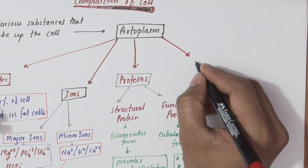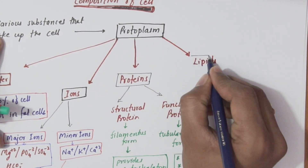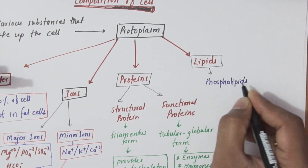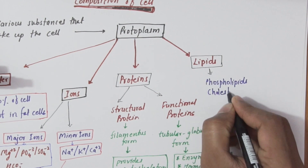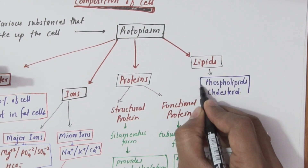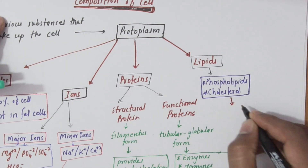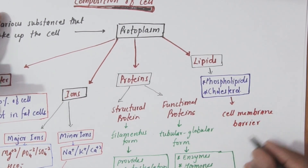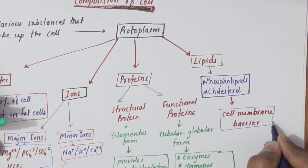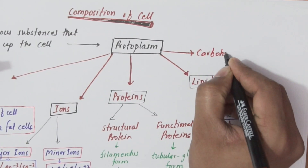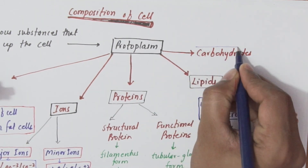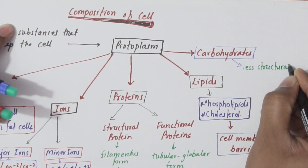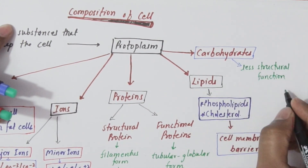The next component is lipids, which contribute two percent of total cell mass. The important lipids are phospholipids and cholesterol, which are used to form the cellular membrane and intracellular membrane barriers that separate the different cell compartments.